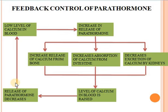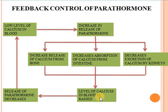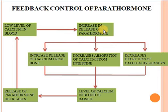Feedback control of parathyroid hormone. Low levels of calcium in the blood stimulate the release of parathyroid hormone from the parathyroid glands. Parathyroid hormone then increases the level of calcium in the blood by releasing calcium from bones, increasing absorption from the intestine, and decreasing excretion by the kidneys. When calcium levels rise in the blood, it produces a negative feedback effect, stimulating the parathyroid glands to decrease the release of parathyroid hormone. In this way, secretion of parathormone is controlled by positive and negative feedback mechanisms.